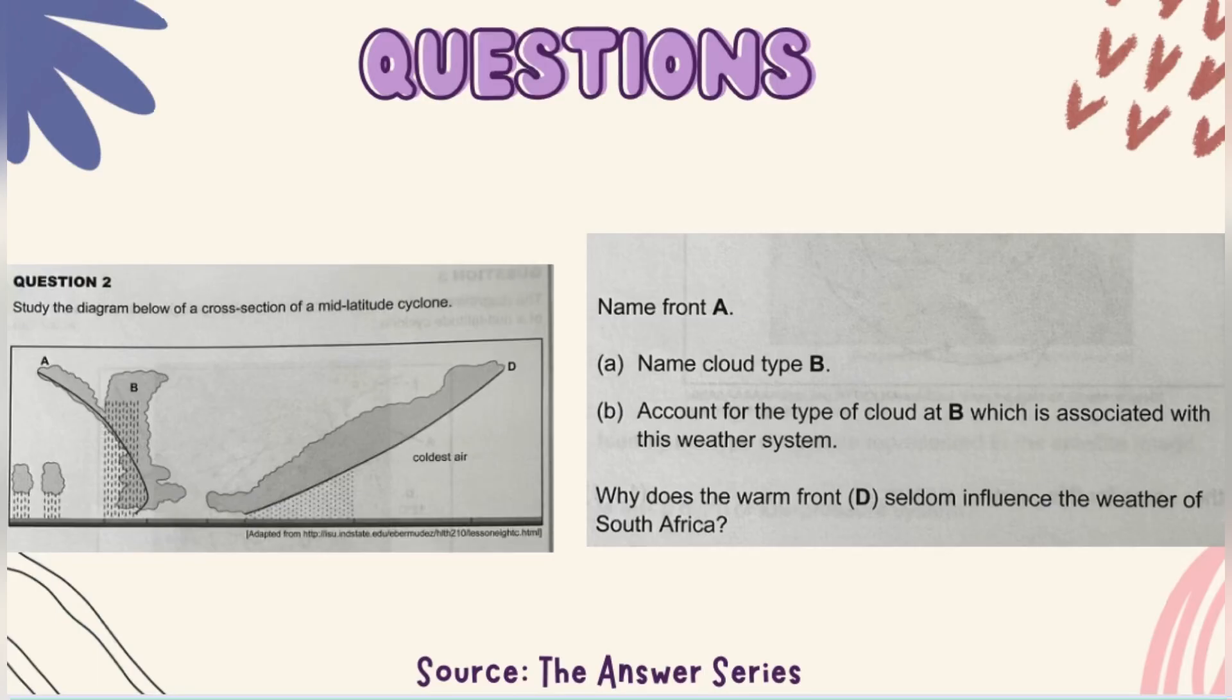Question 2.3: Why does the warm front seldom influence the weather of South Africa? Because it is too far from South Africa. It's too far to affect us.